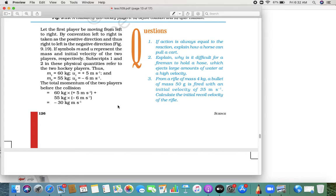This is question number 3, given as homework. A rifle of mass 4 kg and a bullet of mass 50 grams is fired with an initial velocity of 35 meters per second. Calculate the initial recoil velocity.